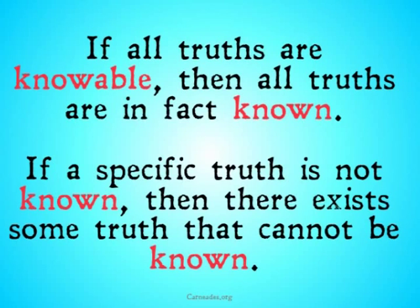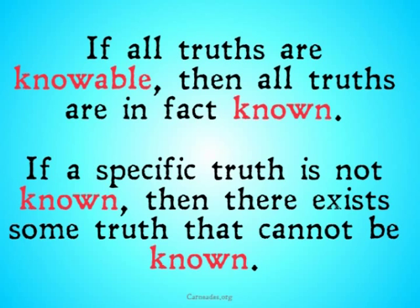Basically, what this is going to say is that if all truths are knowable, then all truths are in fact known. If we can know all of the truths, then all of the truths are already known — by us, not even by God, but by us. And if a specific truth is not known, then there exists some truth that cannot be known. That's just another formulation of the first statement.